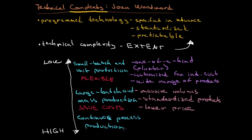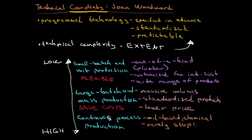Now the most interesting category: continuous process production. Just imagine companies producing oil or chemical products. The most important thing for a factory using this model is that it will rarely stop, because stopping is very expensive. The idea behind the whole business is that production is very smooth.